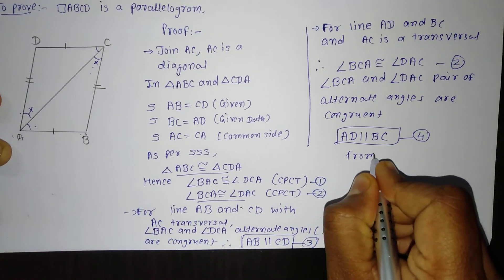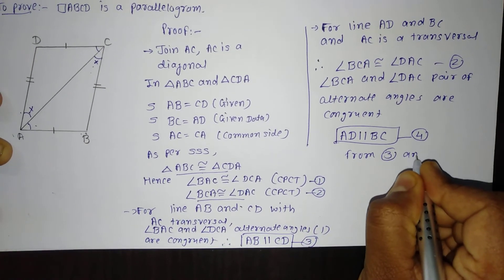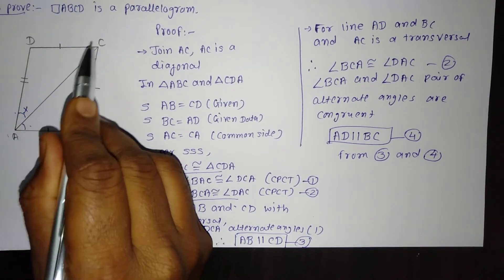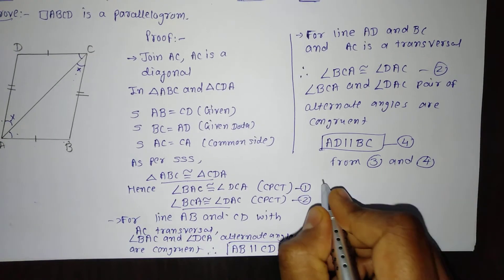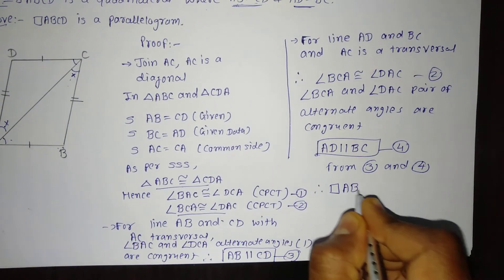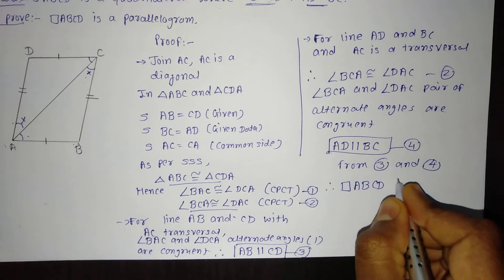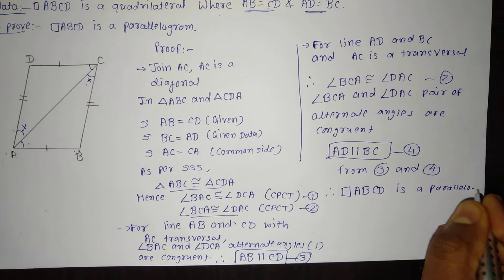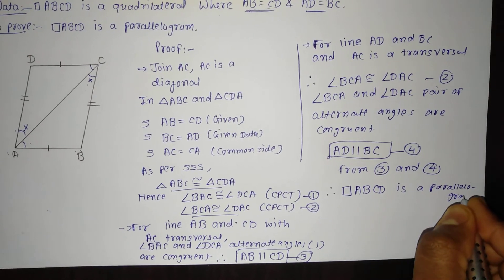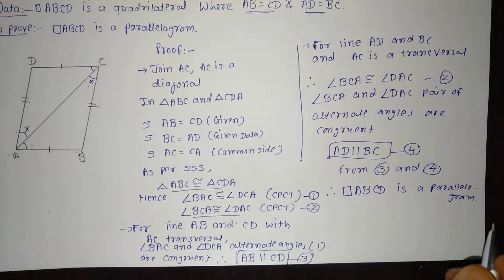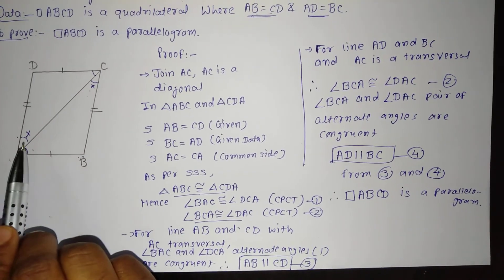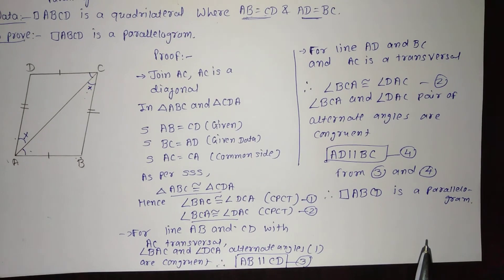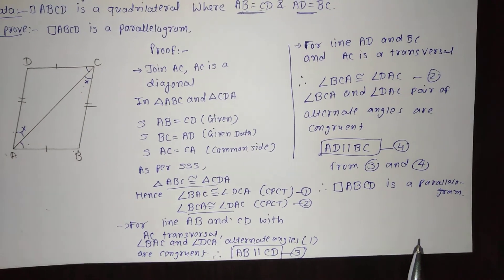From equations 3 and 4: AB is parallel to CD and AD is parallel to BC. Therefore, quadrilateral ABCD is a parallelogram, because the pair of opposite sides are parallel. Hence the quadrilateral is a parallelogram. I hope it is very easy and you can write it in the exam very easily.